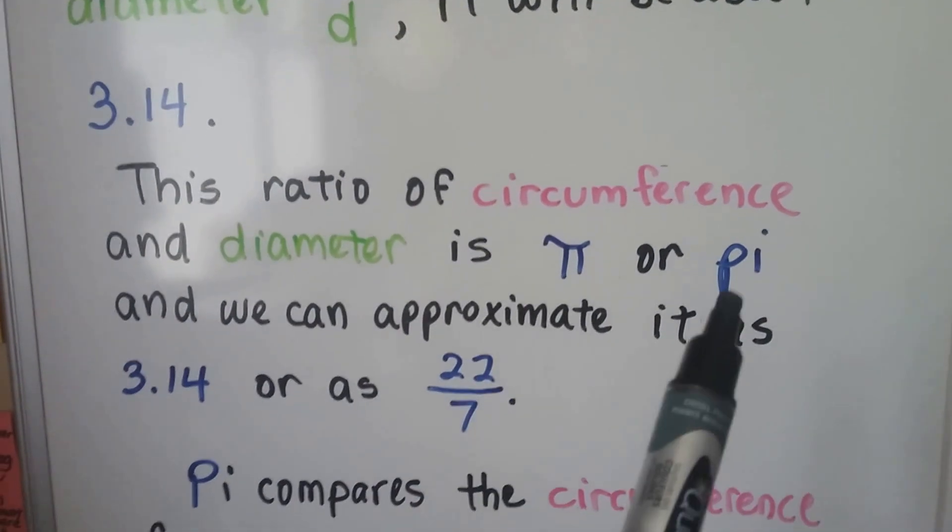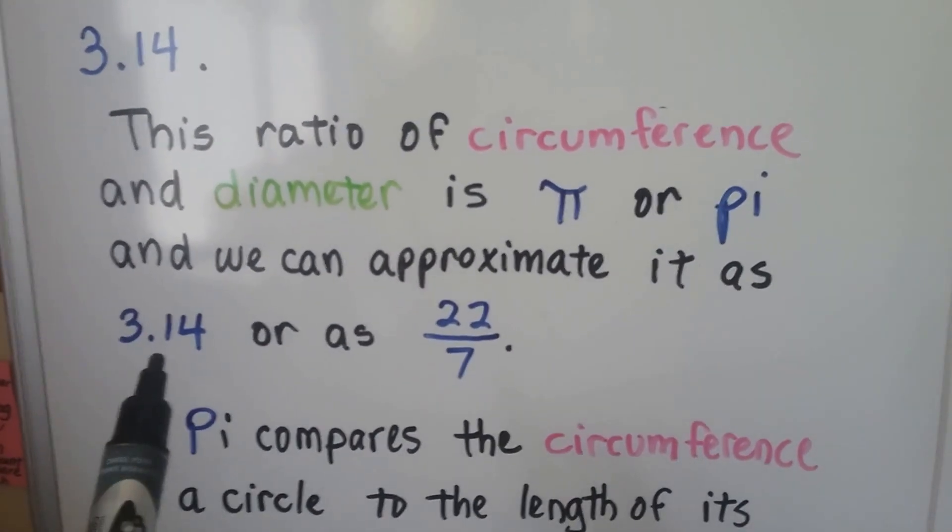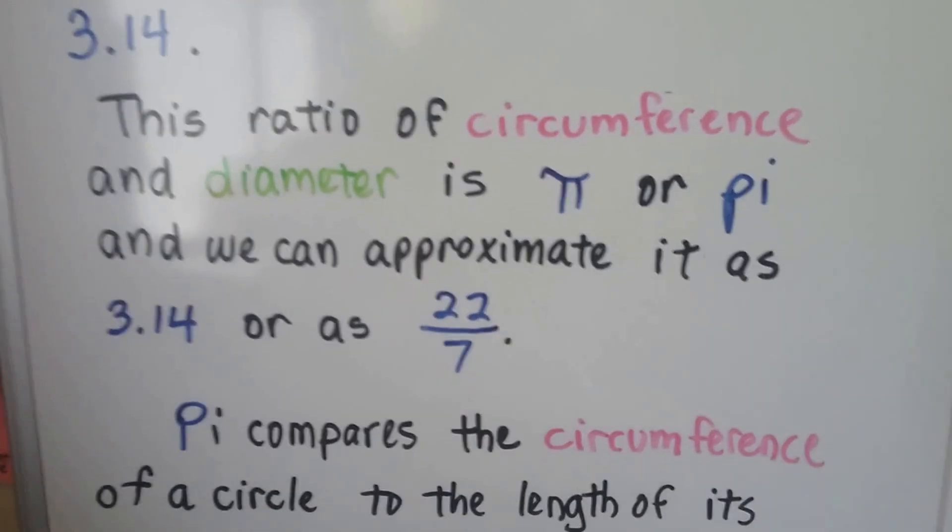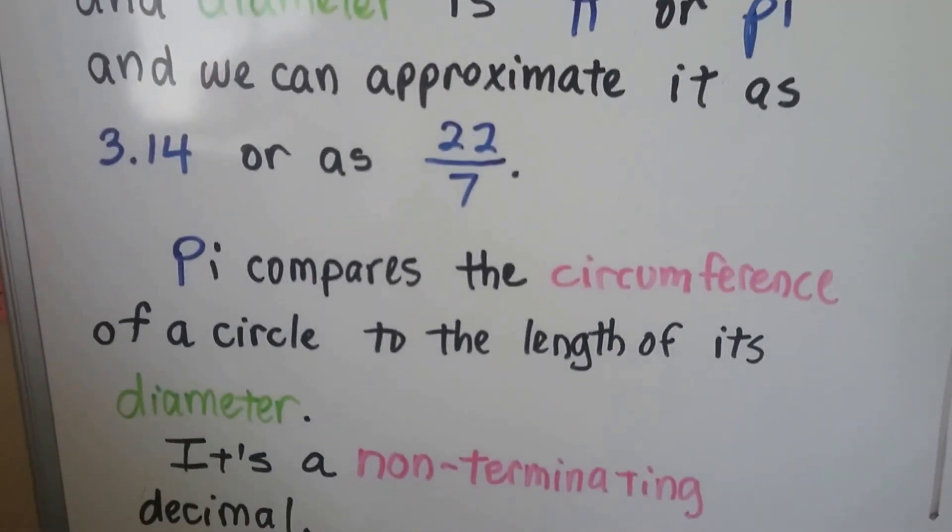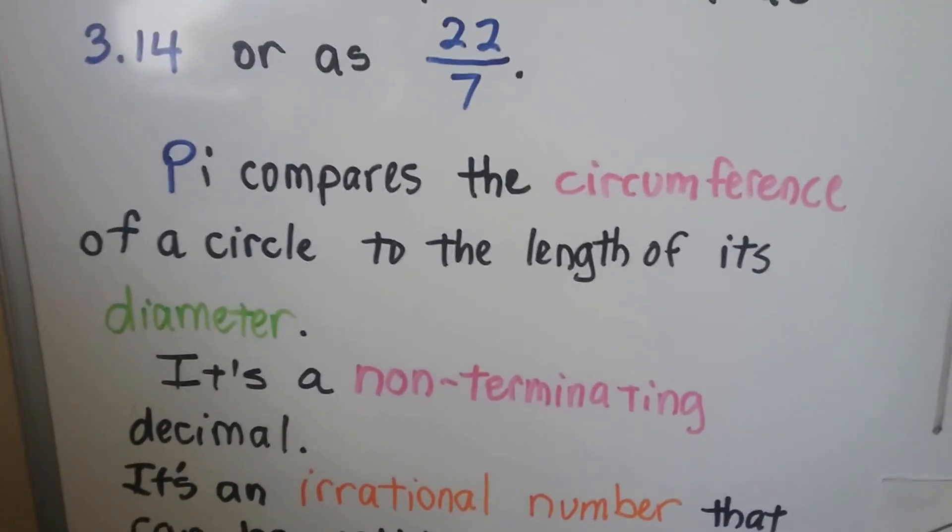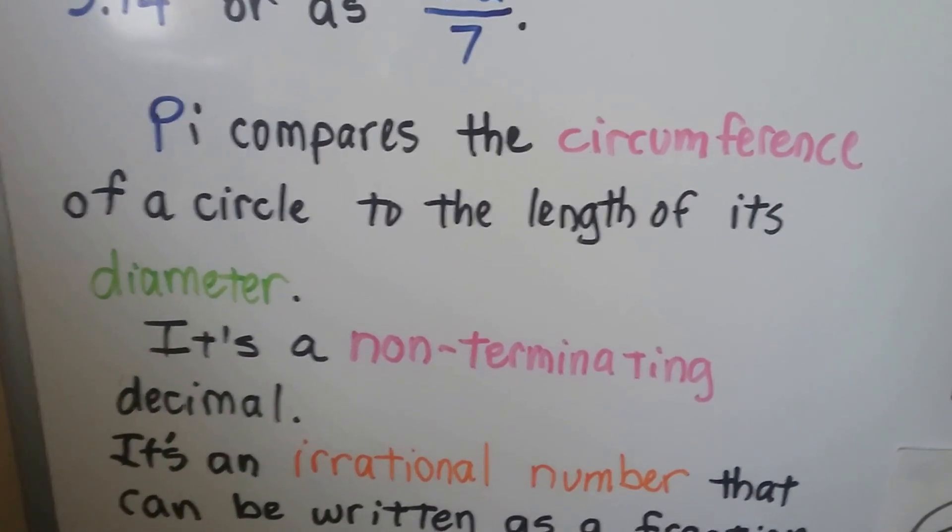This is the pi symbol. And we can approximate its value as 3.14 or as a fraction as 22 sevenths. And pi, it compares the circumference of a circle to the length of its diameter.